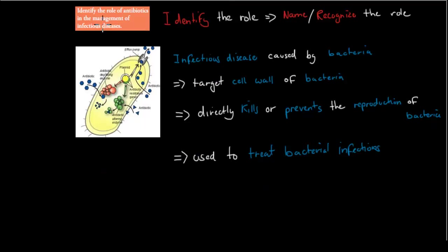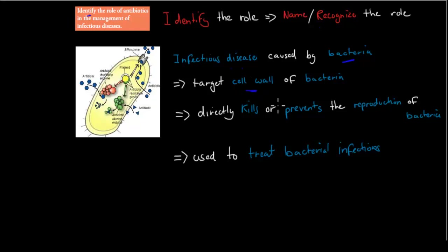The next dot point is 'identify the role of antibiotics in the management of infectious disease.' Identify means name and recognize the role. Antibiotics treat bacterial infections by targeting the cell wall of bacteria — either directly killing the bacteria or preventing their reproduction. It's important to note that antibiotics are only used to treat bacterial infections, not viral ones.